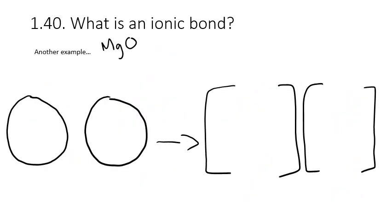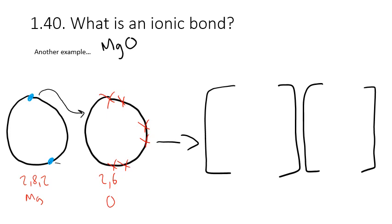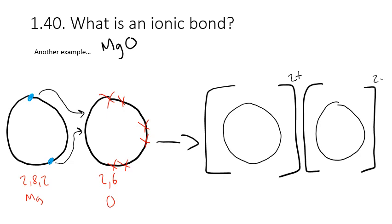Let's do another example: magnesium oxide. Magnesium is 2, 8, 2. We'll only show the outer shell electrons here, but we just have to remember that they are there — it has two electrons in the outer shell and is in group 2. The other element is oxygen, which is 2, 6, with 6 in the outer shell because it's in group 6. The magnesium needs to lose 2 and the oxygen needs to gain 2, so we get a transfer of electrons from magnesium to oxygen. Magnesium forms a 2+ ion and oxygen forms a 2- ion.